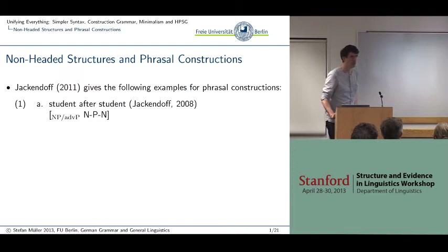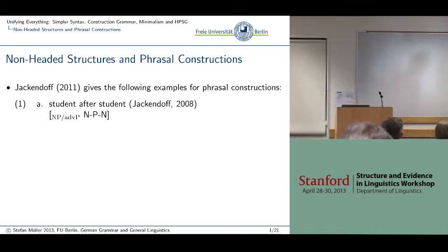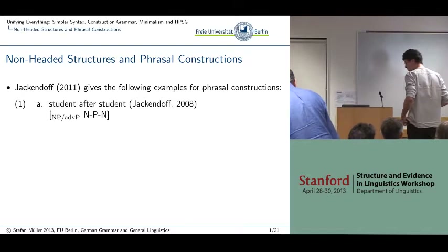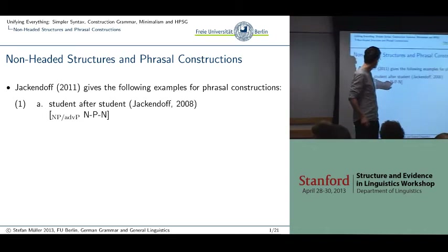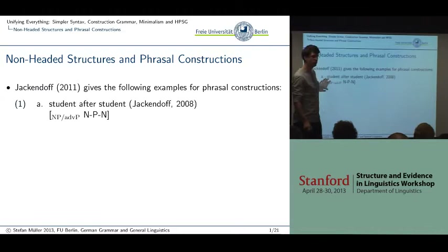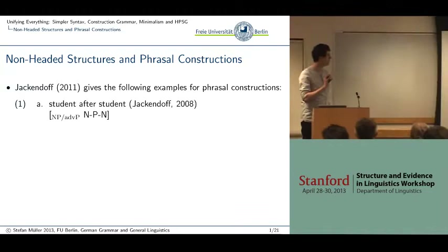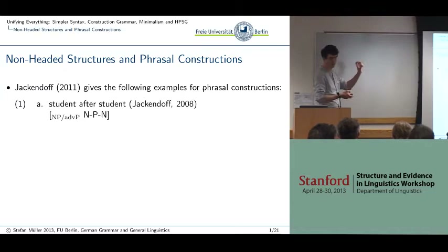Jackendorf in his paper argued that we need — or our theories have to account for — certain phrasal constructions. This is an example of the 'student after student' construction, where we have strange things going on, like a bare noun combined with a preposition and another bare noun that has the same form, and the result is an NP or an adverbial phrase. That's really strange for all head-oriented theories, probably for categorical grammar as well.